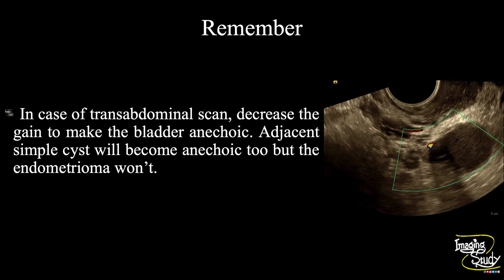Now the take-home message. This was a transvaginal ultrasound scan where you can easily detect the endometrioma. But in case of transabdominal scan, it sometimes looks confusing. So at that time, decrease the gain to make the urinary bladder anechoic. When you decrease the gain, the adjacent simple cyst will become anechoic like the urinary bladder, but the endometrioma won't.